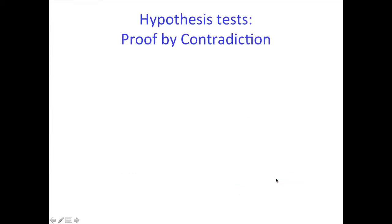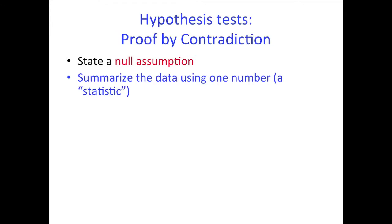The form we're taking here is a proof by contradiction. We make some assumption, and then we assess whether the data contradicts that assumption. We start out with this null hypothesis, this null assumption. In this case, the lady does not have the ability to tell the difference between milk first and tea first.